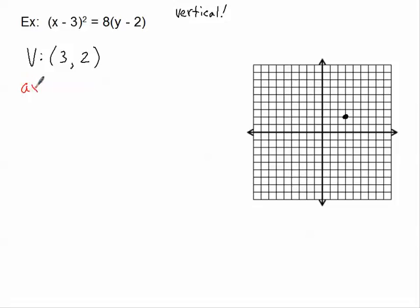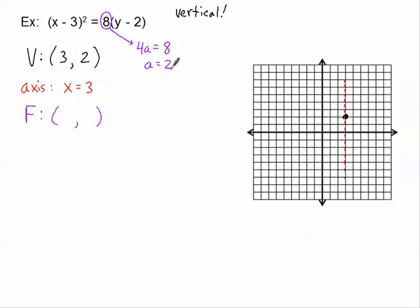The axis of symmetry is a vertical line through the vertex, so it's x equals 3. Next I'm going to find the focus. I need to find what a is: from the standard form, 4a equals 8, therefore a equals 2. Since that's positive, I'm going up 2 units from the vertex to get to my focus. So the focus is at (3, 4).